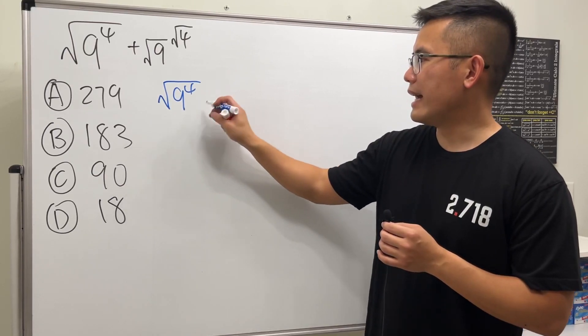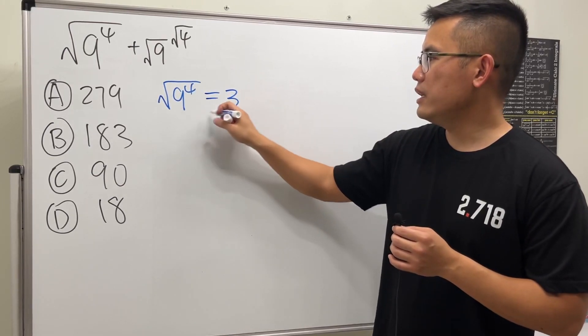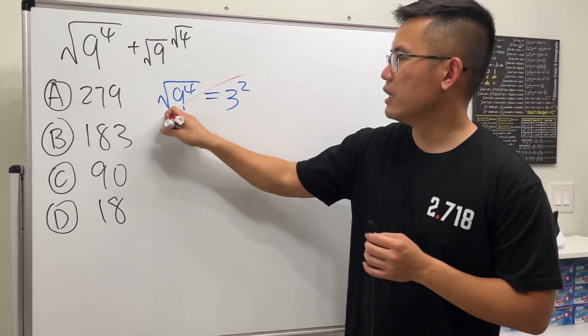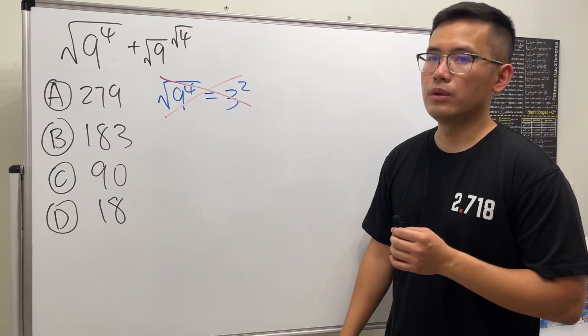You cannot just do square root of 9 and say this is 3, and then do square root of 4, which is 2. This is not correct. This is not the way to go.